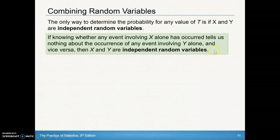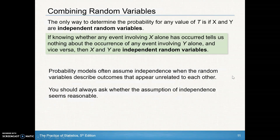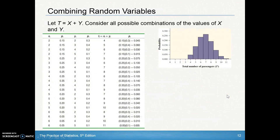In probability models, we often assume independence when random variables describe outcomes that appear unrelated to each other. You should always ask whether the assumption of independence seems reasonable. In our problem, it is reasonable to assume that Pete's Jeep Tours and Erin's Adventures are independent since the two siblings operate the tours in different parts of the country, so one wouldn't affect the other.